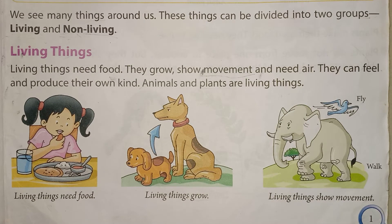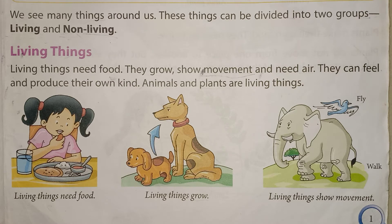Why are they living things? Because of the characteristics of living things. Living things need food — we all need food. Dogs need food, cats need food, humans need food, a sparrow needs food. So human beings, animals, and birds are all living things because they need food.